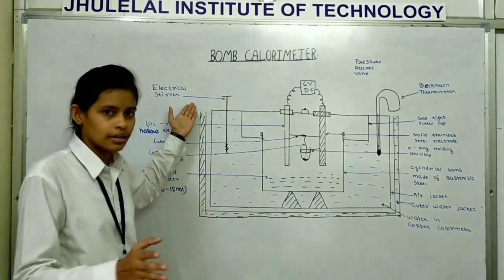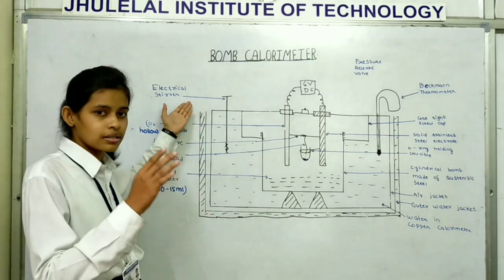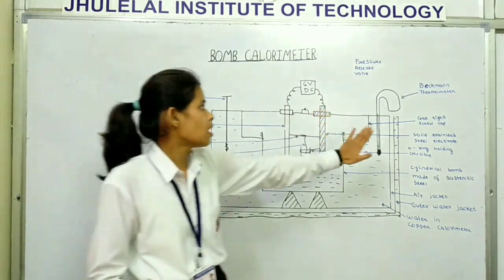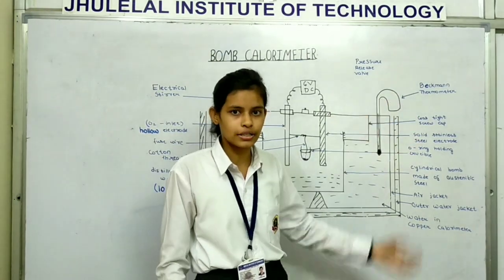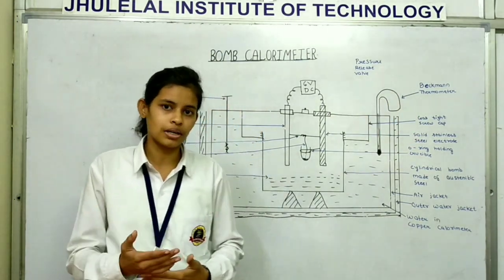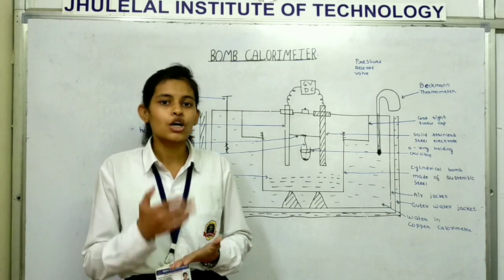Electrical stirrer is started and Beckmann thermometer is adjusted. After 5 minutes temperature is noted.